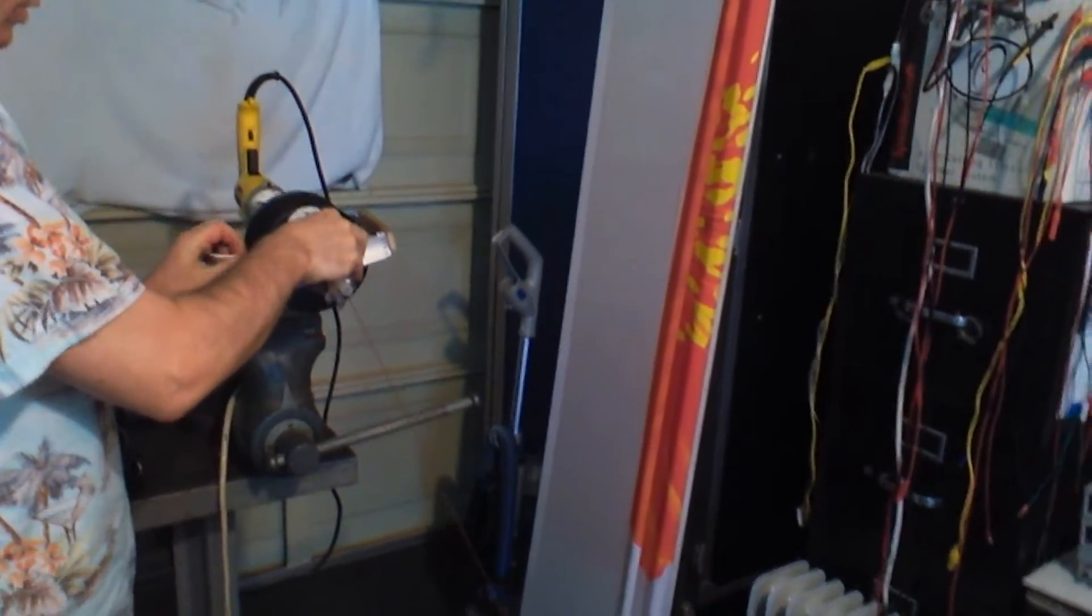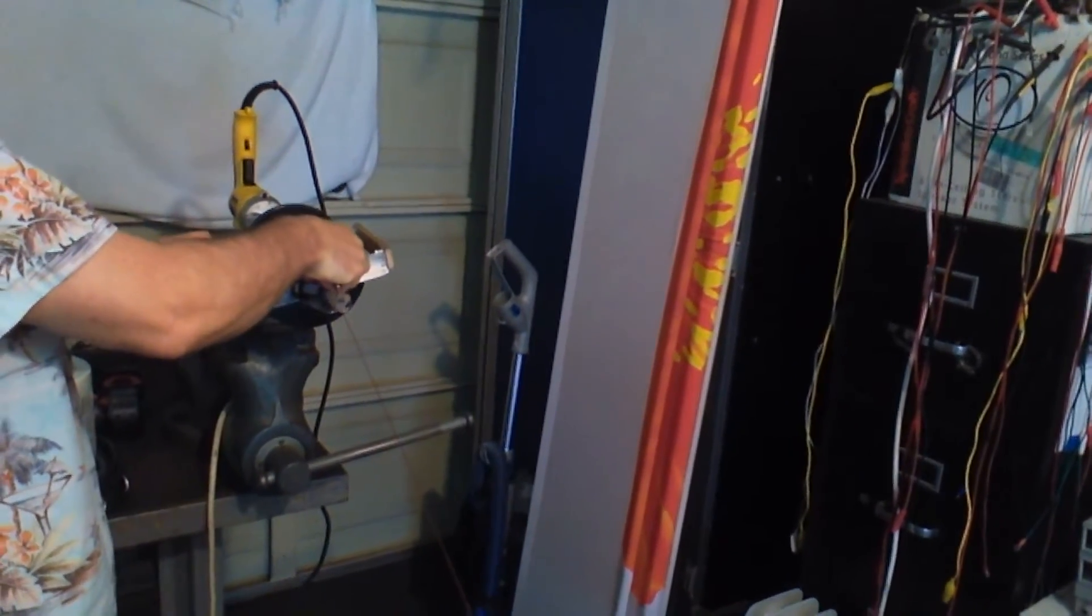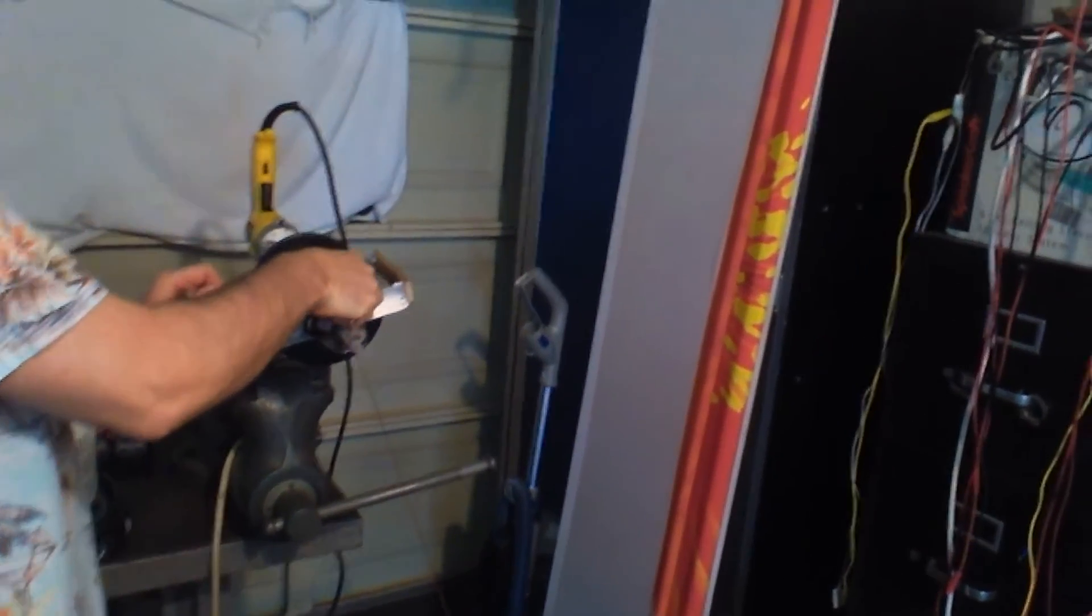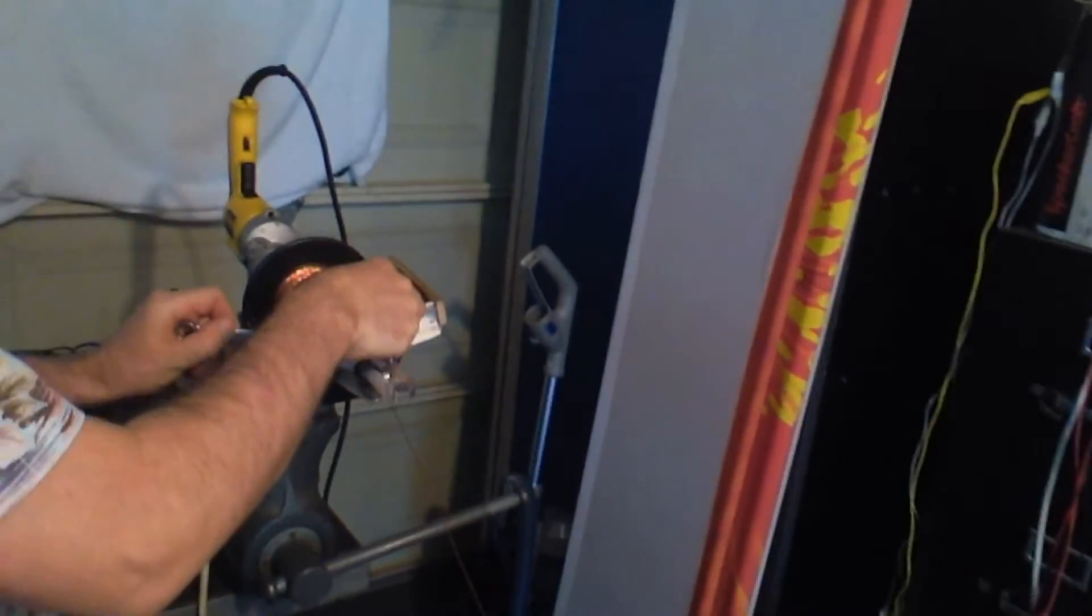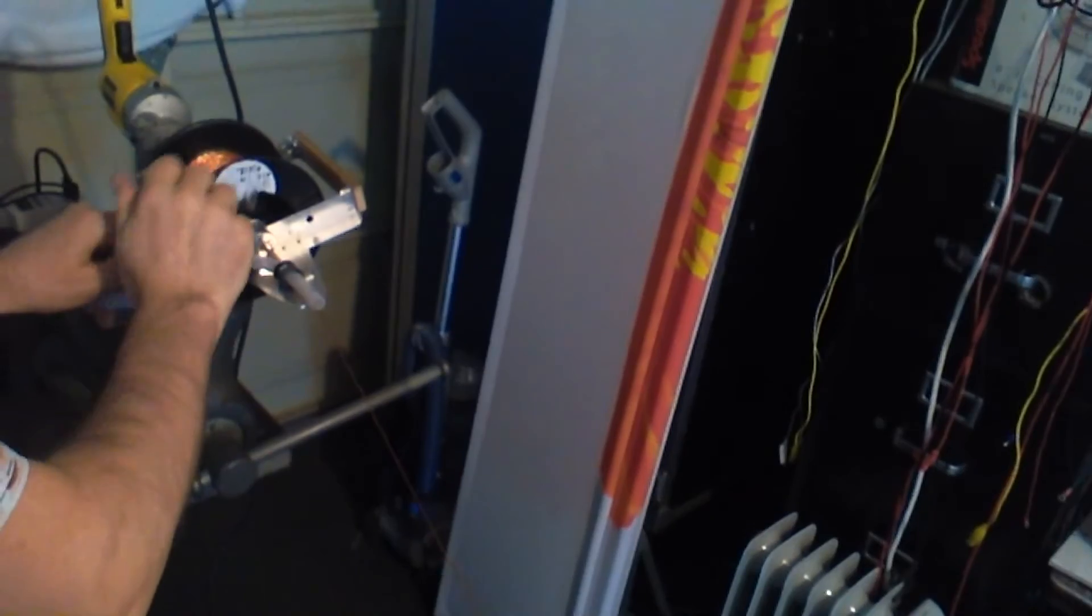What we're doing is loosening up this jam nut that holds this spool solid with this twisting mechanism, and then we pull the wire back into the spool after we twist it. Loosen this up so it spins freely.